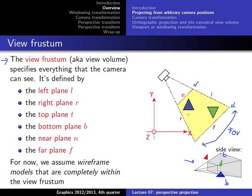For today we will restrict ourselves to wireframe models, so we only look at the vectors that represent geometric objects like triangles and project them to get a wireframe. We will look into shading and rasterization in a later lecture. Also, we will only consider objects that are fully inside the view frustum today; objects that are partly outside require special treatment which we'll cover in a later lecture.